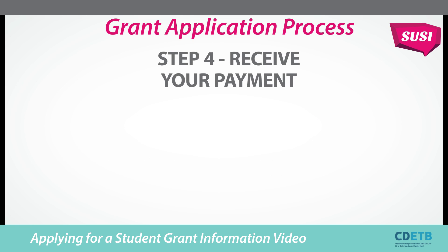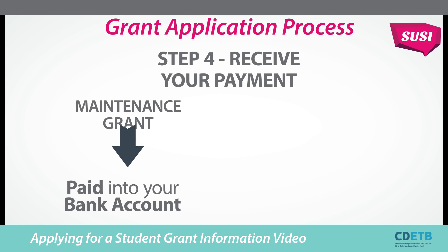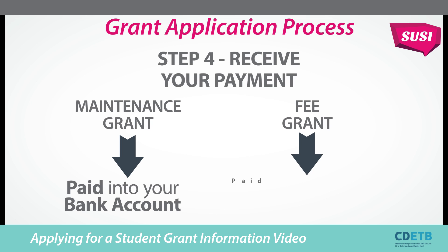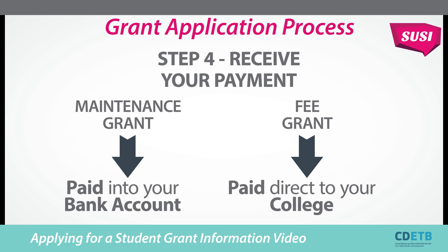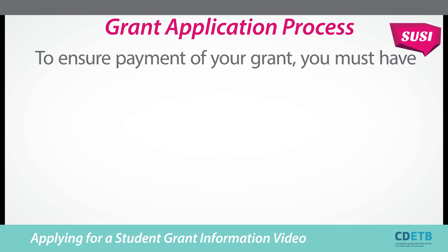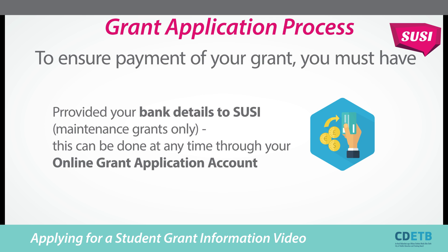Step 4, Receive your payment. Maintenance grants are paid into your own bank account and fee grants are paid directly to the college you are attending. To ensure payment of your grant, you must have provided your bank details to SUSIE for maintenance grants only. This can be done at any time through your online grant application account.